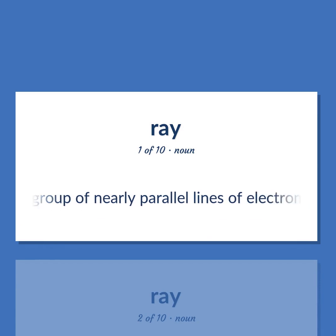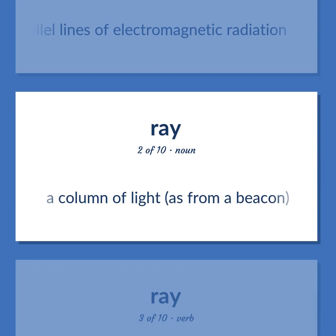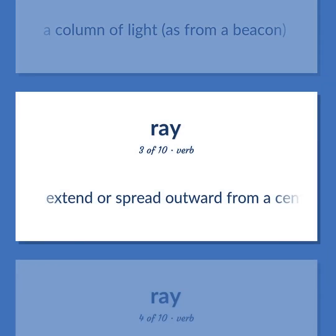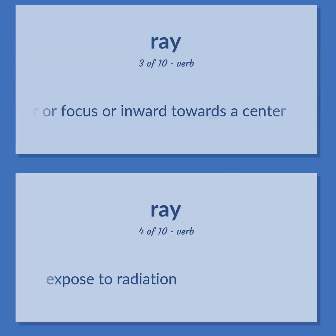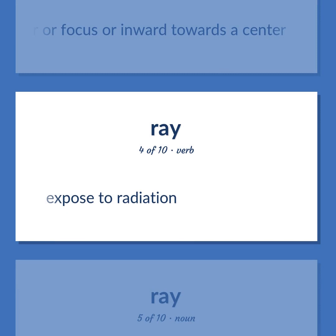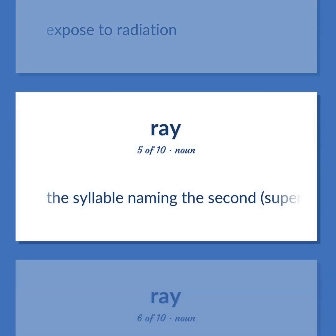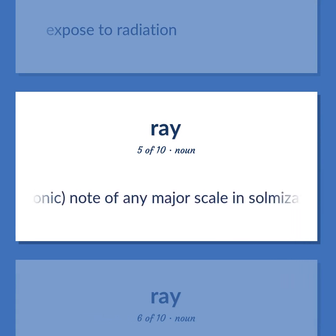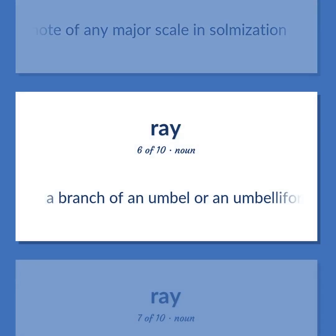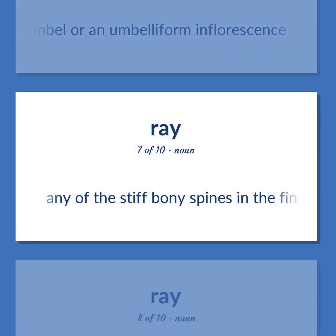Ray: A group of nearly parallel lines of electromagnetic radiation. A column of light, as from a beacon. Extend or spread outward from a center or focus or inward towards a center. Exposed to radiation. The syllable naming the second, supertonic, note of any major scale in solmization. A branch of an umbel or umbelliform inflorescence. Any of the stiff bony spines in the fin of a fish.